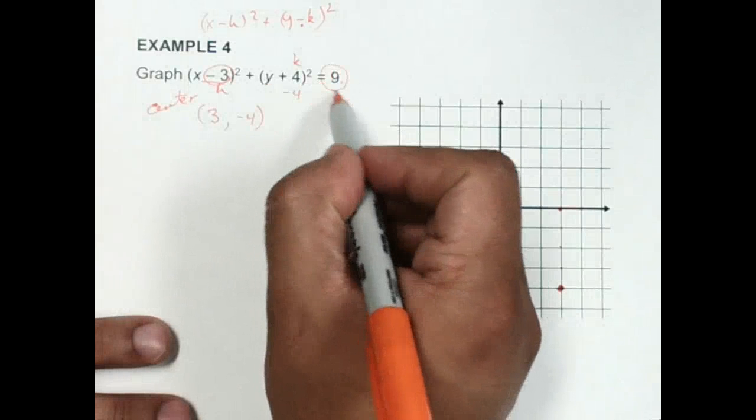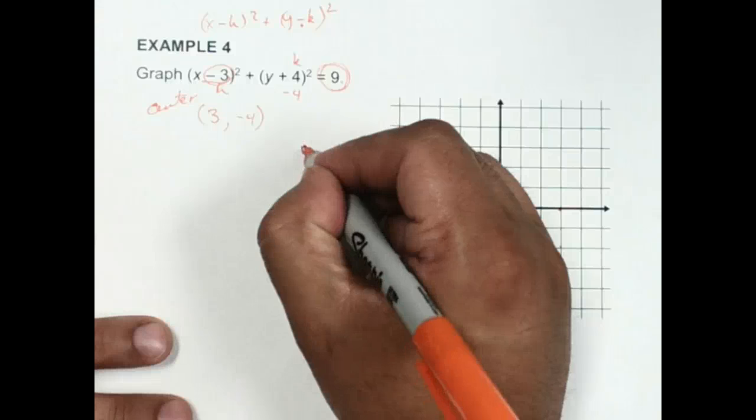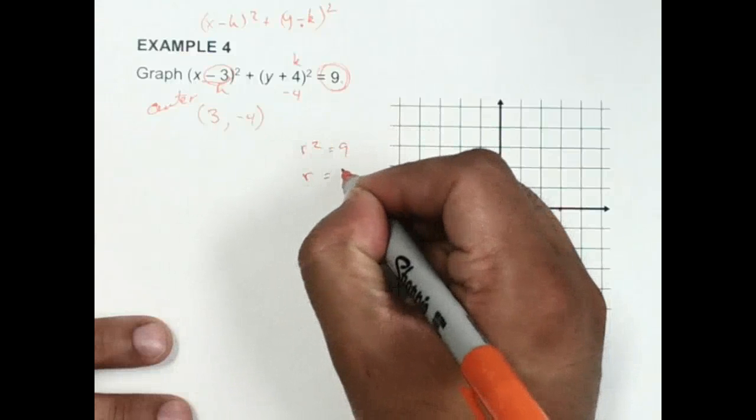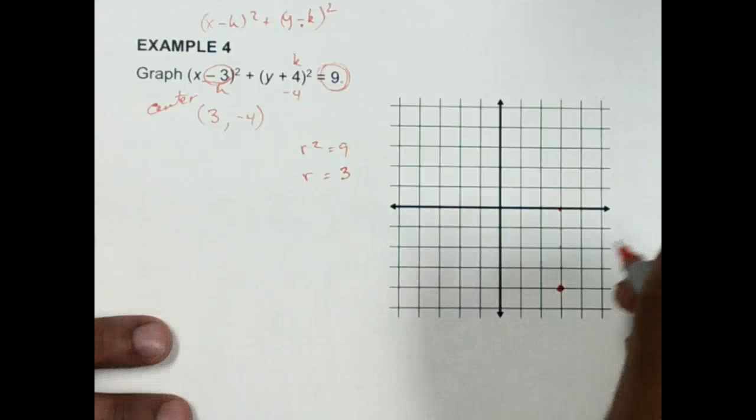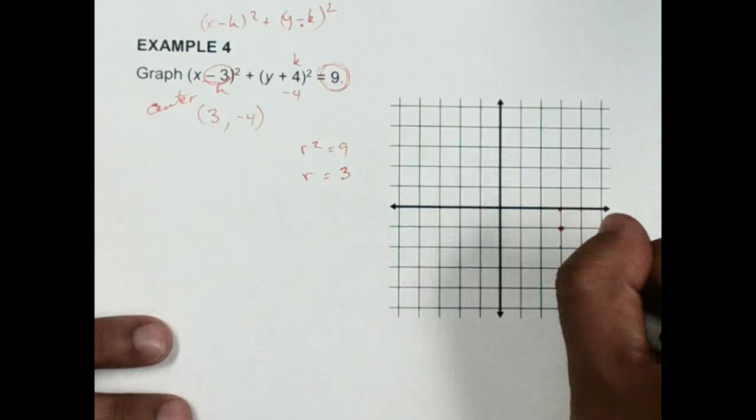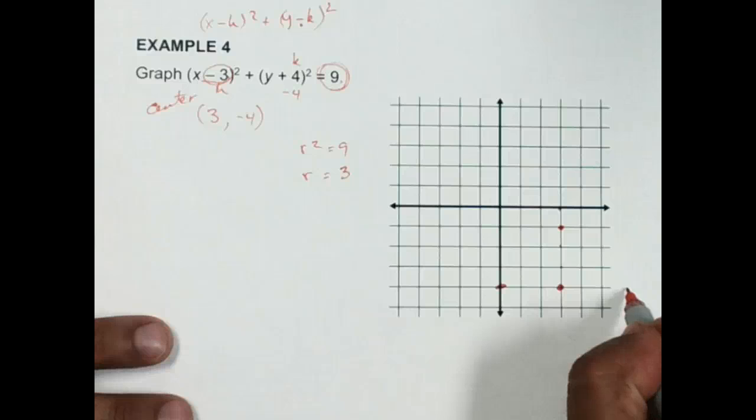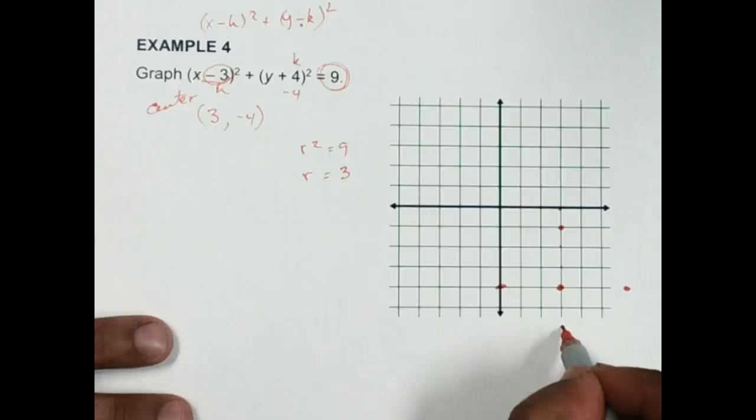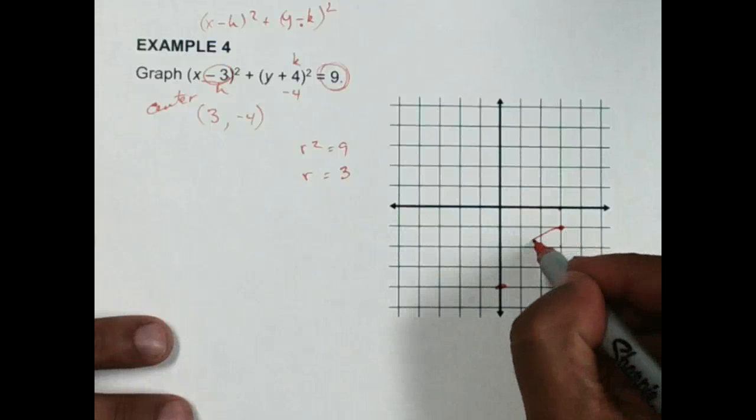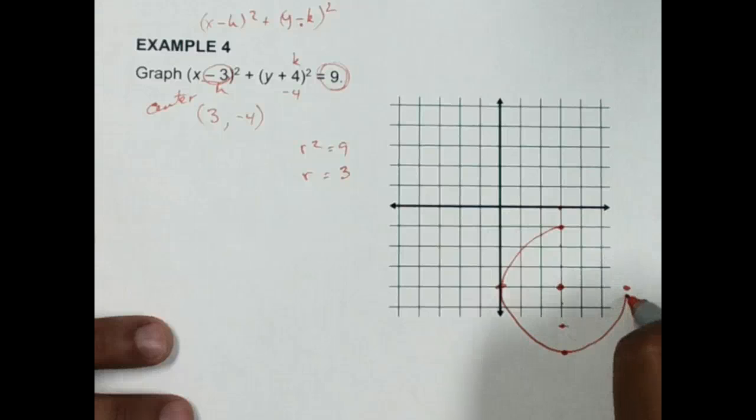Now the radius, r² is 9, so that tells me that r is going to be 3. So kind of like we did before, we'd count 3 up, 3 down, 3 to the left, and 3 to the right. We're going to have to kind of estimate this out. There's going to be 1 here, 1, 2, and then 3. So that would be my points. My circle would look something like that.